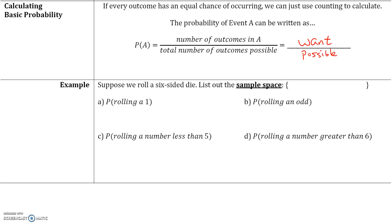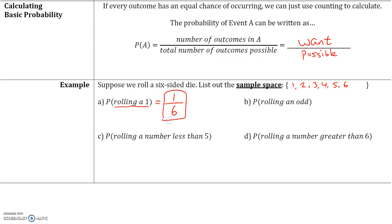For example, let's say we roll a six-sided die. The sample space — all possible outcomes — is {1, 2, 3, 4, 5, 6}. The probability of rolling a one: how many times does the number one occur in the sample space? It occurs once. The total number of outcomes possible is six, so the probability is one over six.